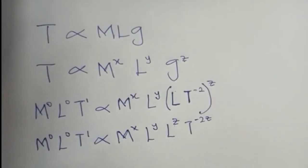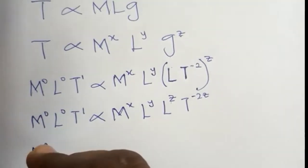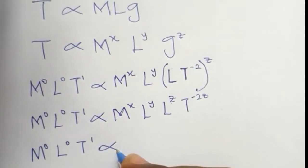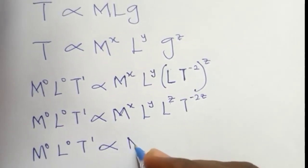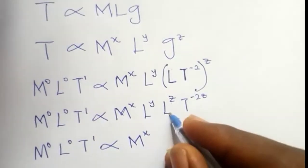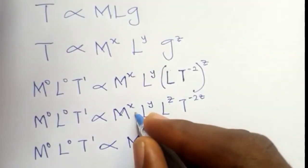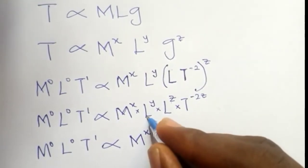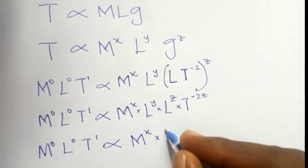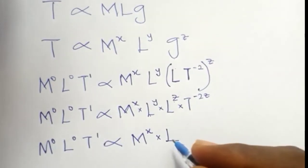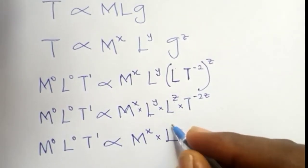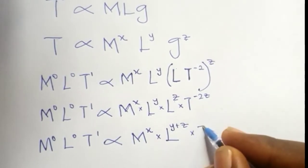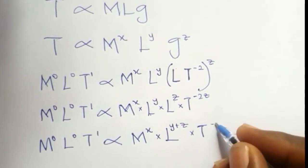So we'll continue. M raised to 0, L raised to 0, T raised to 1, proportional to M^x. There's a multiplication sign, don't let it confuse you. The law of indices says when the bases are the same, we add the powers. So we'll be saying y plus z, then times T raised to minus 2z.